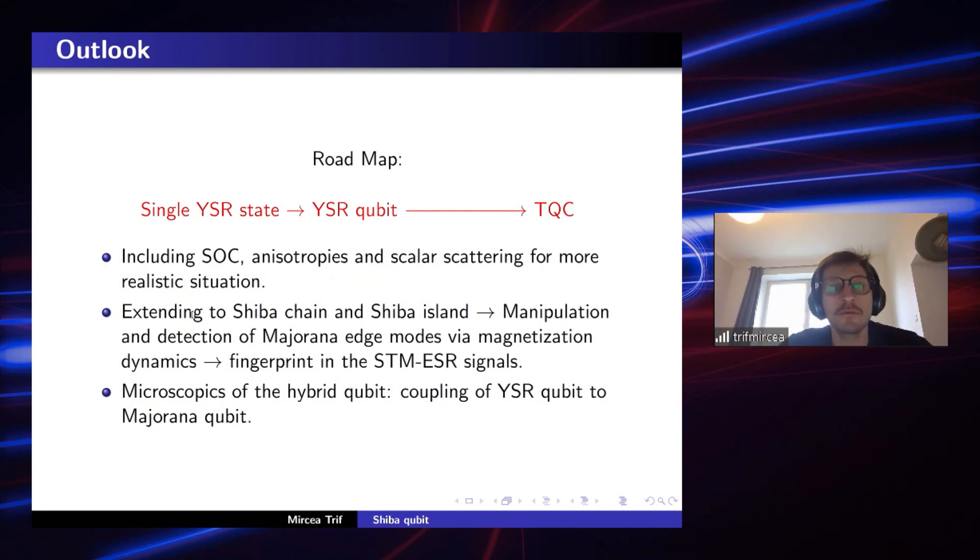There are many things left to be done. For example, to include spin orbit interaction, anisotropic, scalar scattering. So, for example, scalar scattering we already introduced and it doesn't affect much. Extending the Shiba chain to Shiba island, one can manipulate, basically could manipulate the chain dynamically. So, not just a dimer, but maybe facilitate with dynamics to have Majorana fermions emerging. And furthermore, what's even more important is to actually look at the microscopics of this hybrid qubit that is built up of YSR qubit and the Majorana qubit emerging in topological Shiba chain.